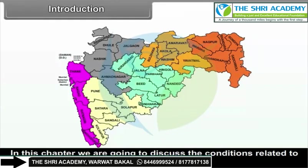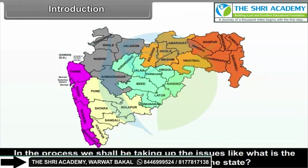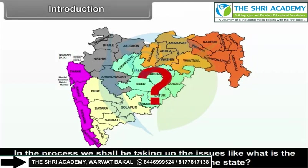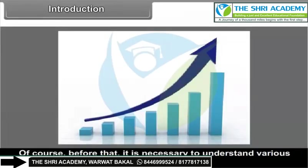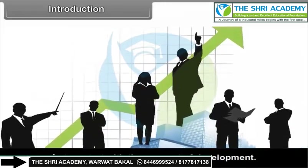In this chapter, we are going to discuss the conditions related to regional development in Maharashtra. In the process, we shall be taking up issues like what is the status of development in different parts of the state, why is it so, and what factors are responsible for these conditions. Before that, it is necessary to understand various concepts related to development. Let us start with the concept of development.